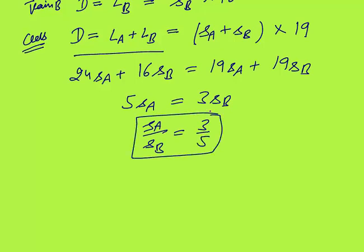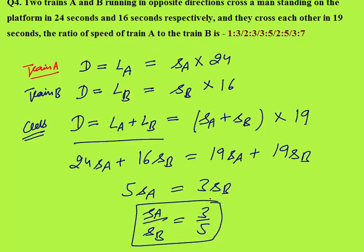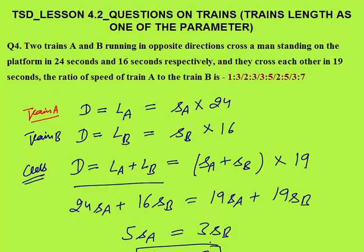This question can be solved in the exam in under 30 seconds. The answer is option C, that is 3:5. That was all about Lesson 4.2. In the next lesson, I will continue with more on Time, Speed and Distance. Thank you.